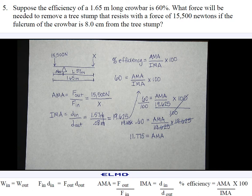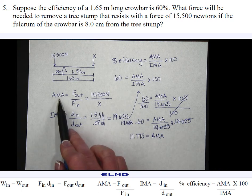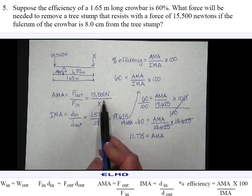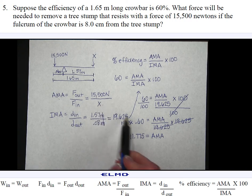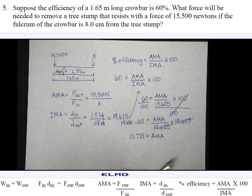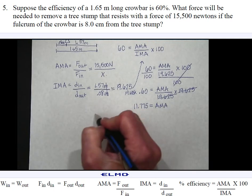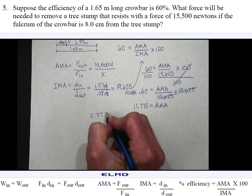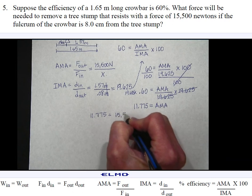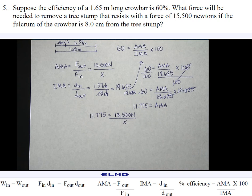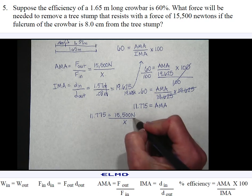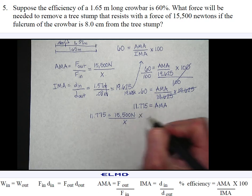Now I'm ready to take my information over here where I found the formula for actual mechanical advantage for our problem to be 15,500 newtons divided by X, and I'm going to plug that in over here for AMA. So now I have 11.775 equals 15,500 newtons divided by X. I'm trying to find X. That's my effort force, the amount of force that I need to exert in order to lift this tree stump. And so in order to undo dividing by X, I'm going to multiply both sides by X.